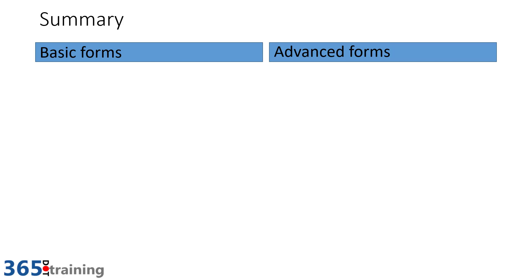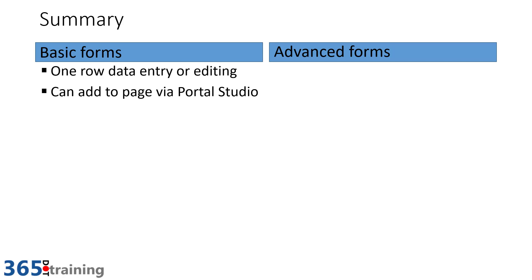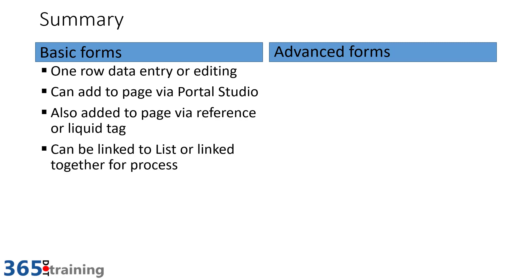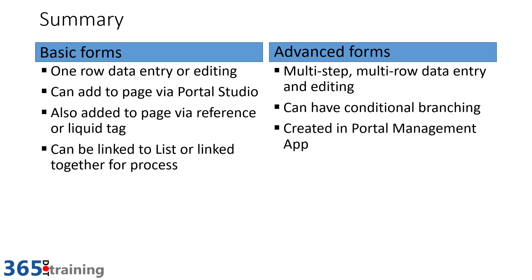To summarize: basic forms allow one-row data entry, editing, or read-only for Dataverse data. They can be added through portal studio, a liquid tag, or a page reference in the portal management app. Advanced forms offer multi-step, multi-row data entry and editing with conditional branching. They are created in the portal management app, not in the studio, and added to a page via a lookup reference or liquid tag.